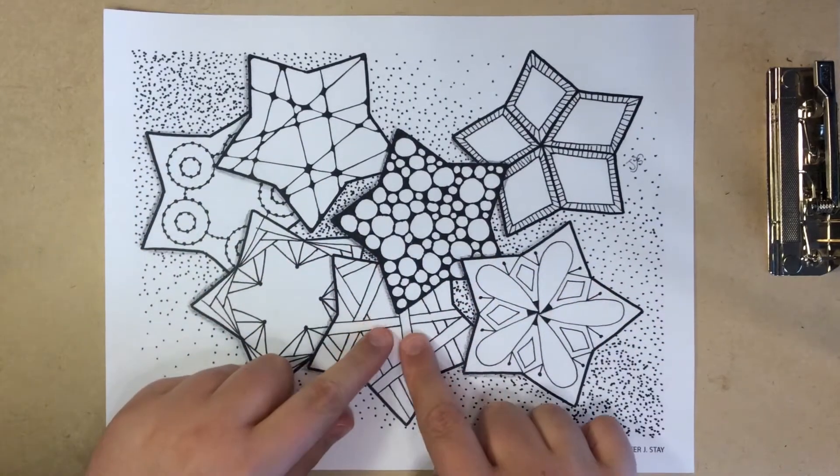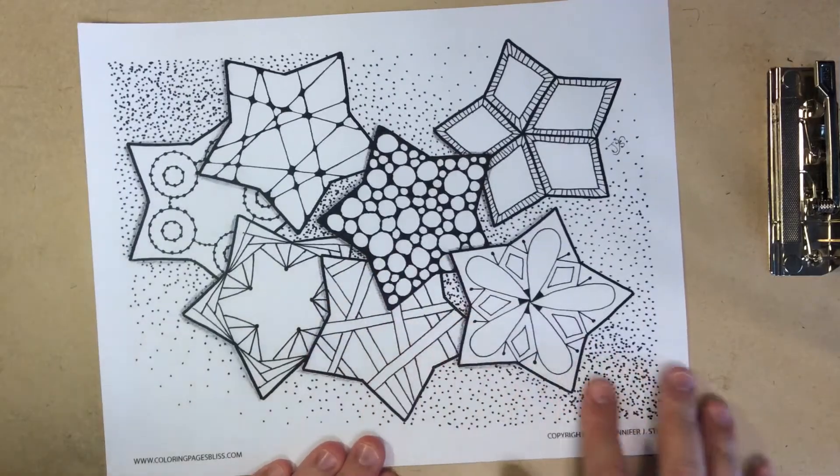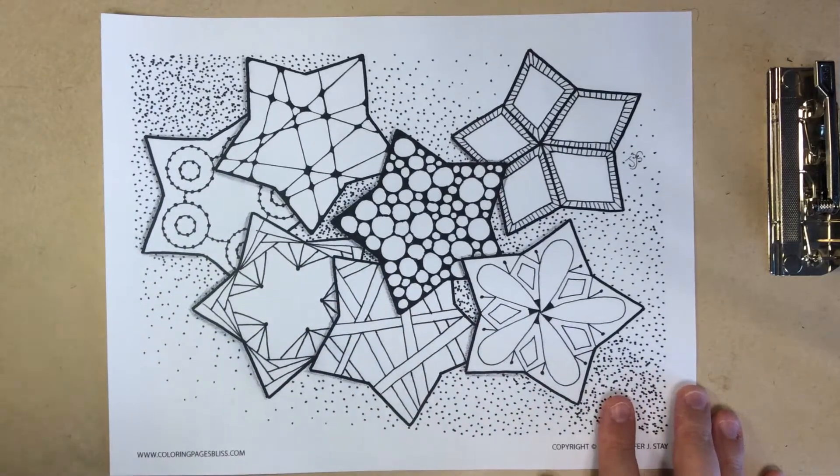Okay, we're going to focus on this star right here today and we're going to learn how to make those stripes so they look like they're going in and under each other.